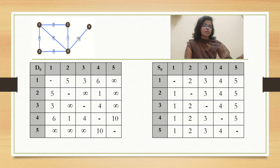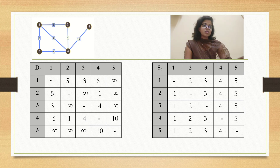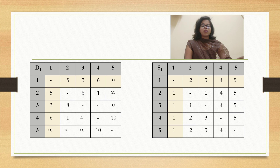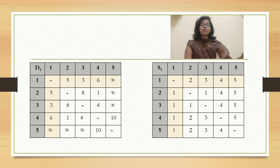So the weight will be 10. Moving on to the sequence matrix S0: in the initial stage all diagonal entries are kept empty, and all entries below column 1 are 1, below column 2 are 2, below column 3 are 3, below column 4 are 4, and below column 5 are 5. Now moving on to the first iteration — the pivot row and pivot column will be the first row and first column respectively. We will be fixing our first row and first column from the previous D0 matrix, and all diagonal entries will be kept empty. Similarly for S1, the first row and first column will be kept as in S0.